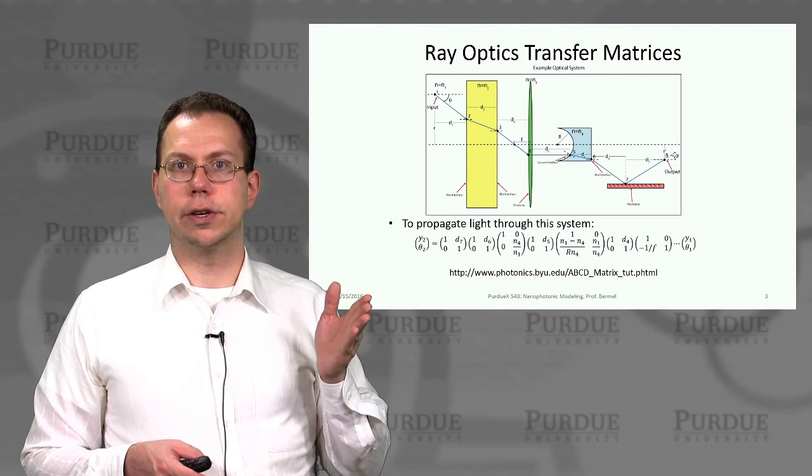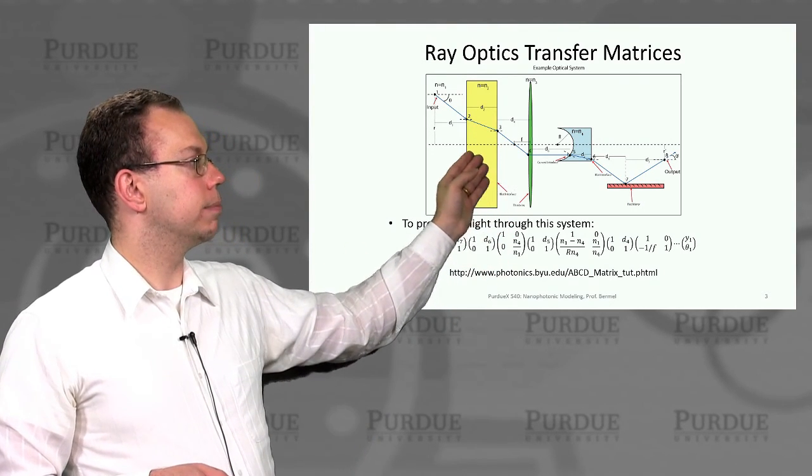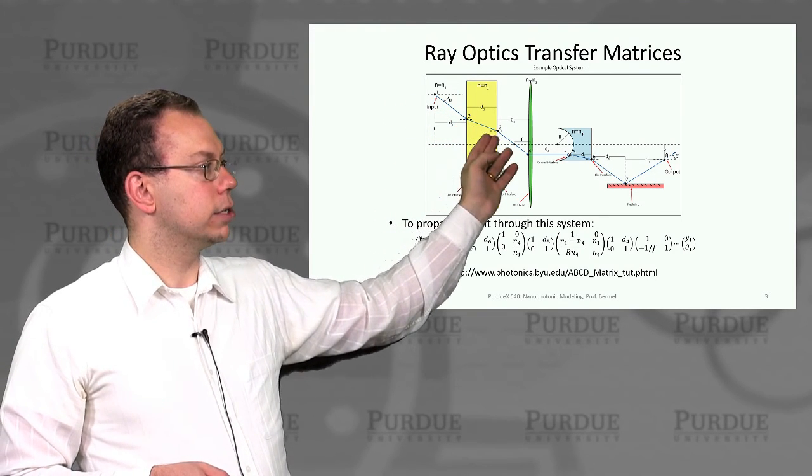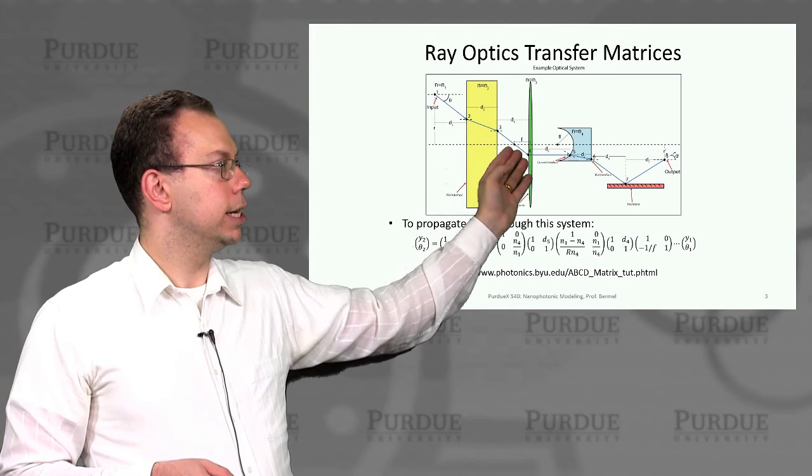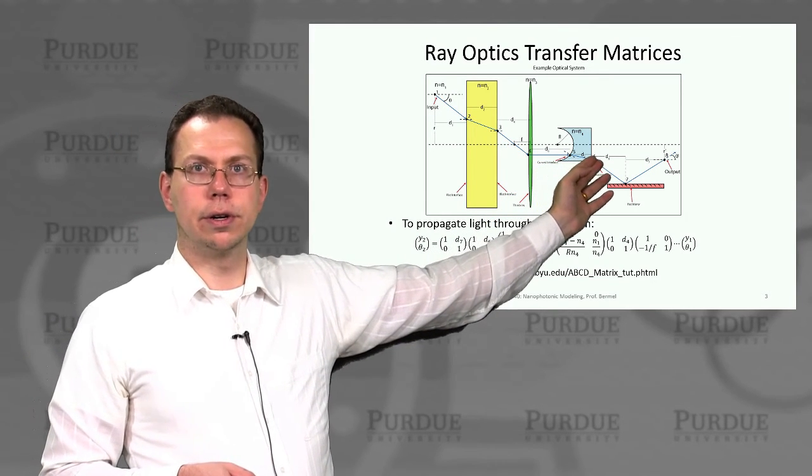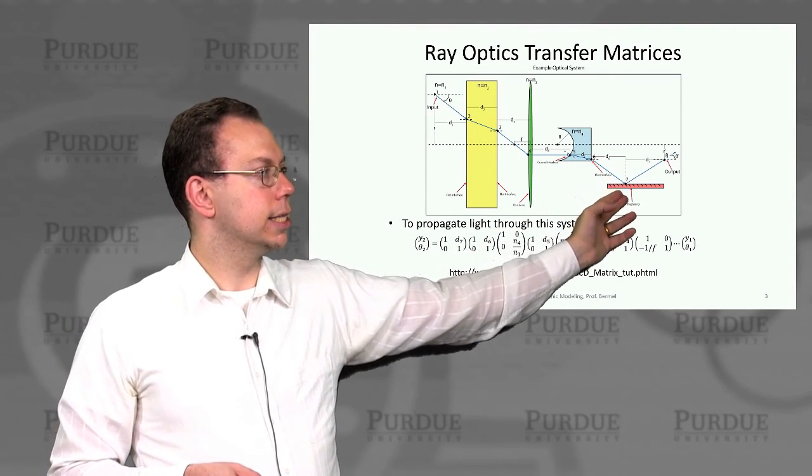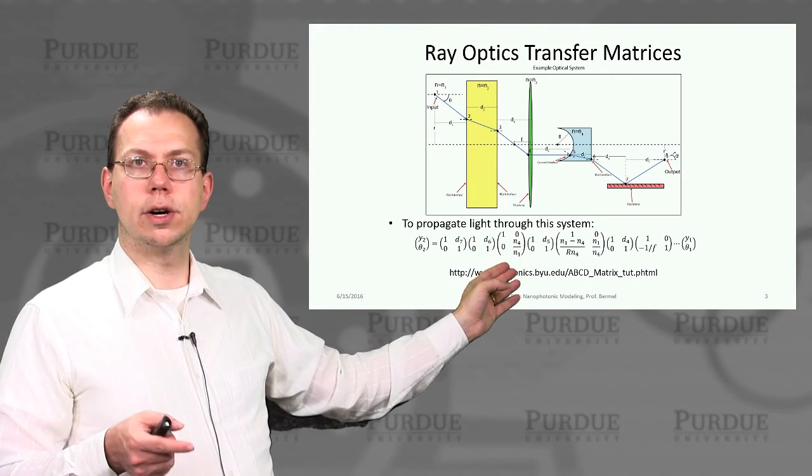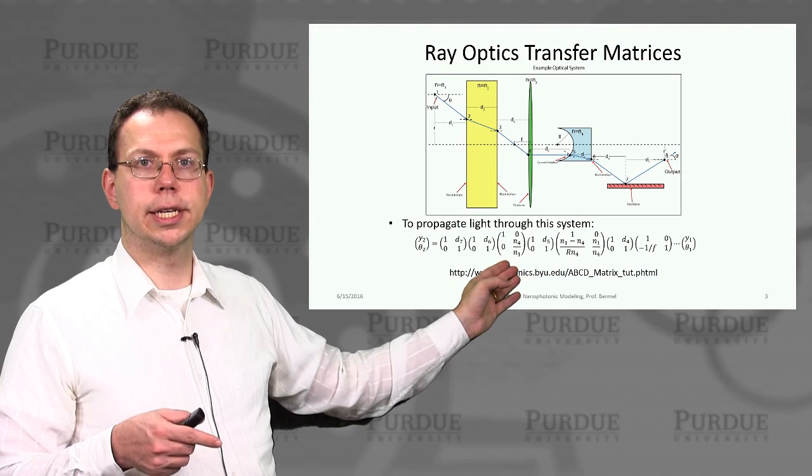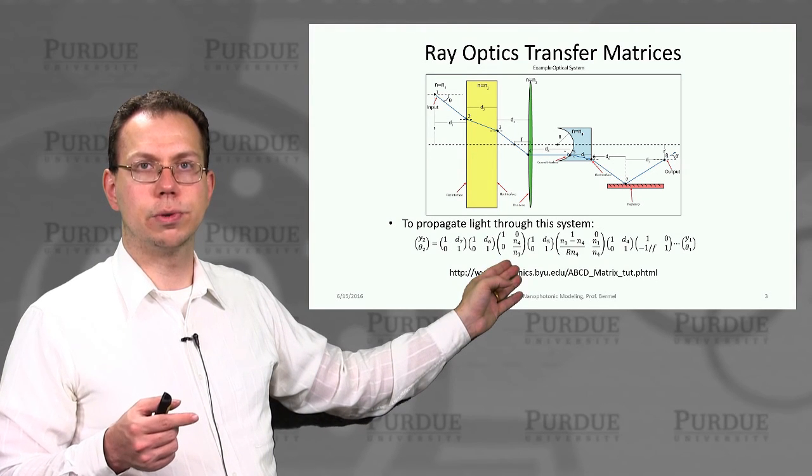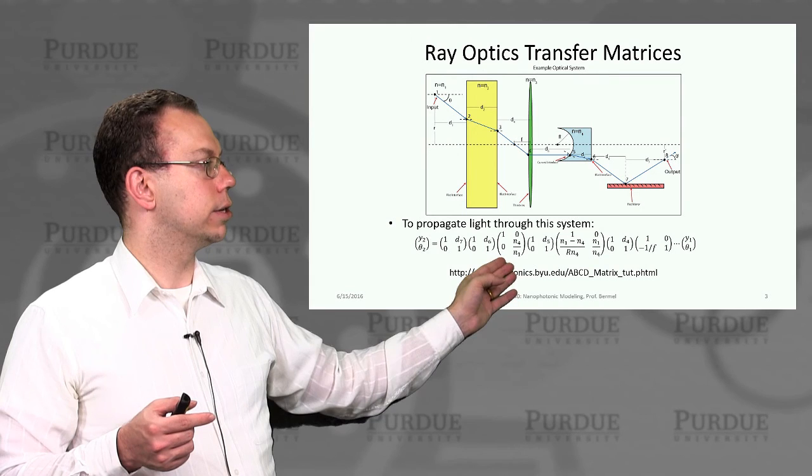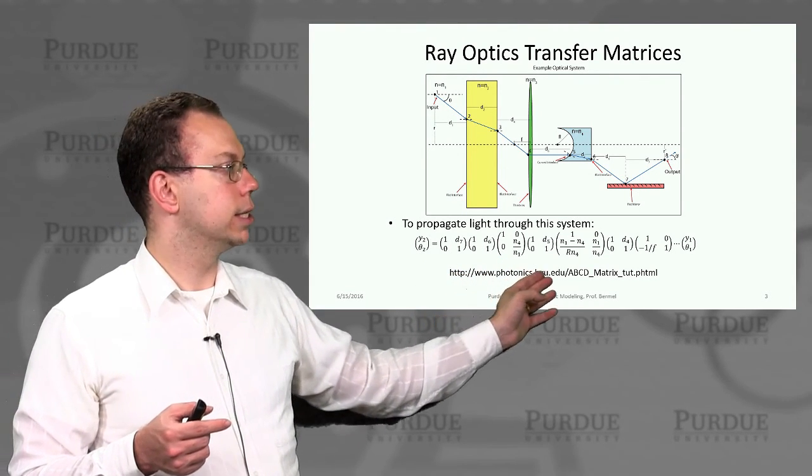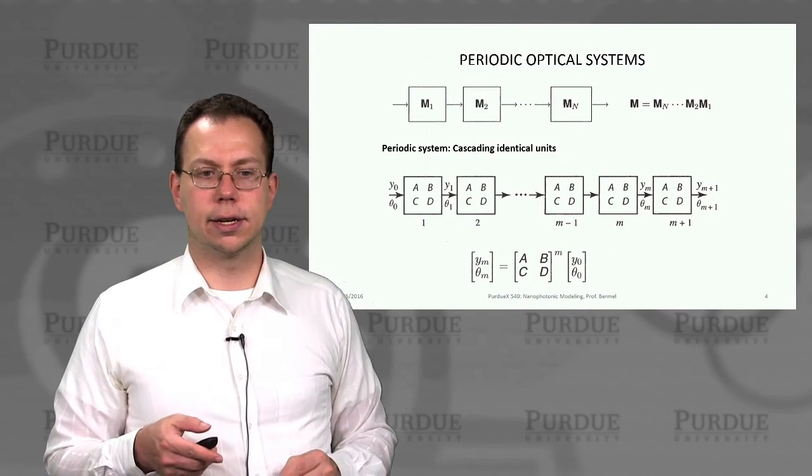You can use that for a fairly complex system. This is one example where we have input here of a ray passing through high index medium, then through a thin lens, then through a half thick lens, and then a mirror, and then output. We can extract all the elementary optical matrices that we discussed in lecture 2.1, multiply those all together, and then that gives us an output. If you want more details on this example, please see this website. It explains how to do the calculation.